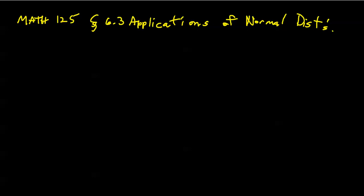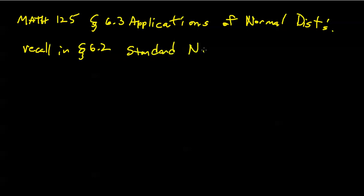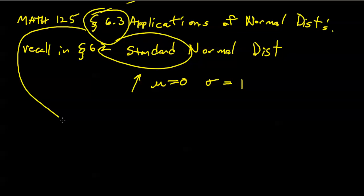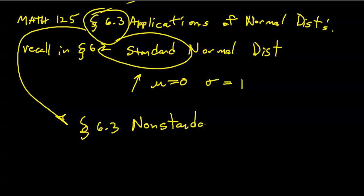Good afternoon. Today we're going to talk about section 6.3 entitled Applications of Normal Distributions. Recall in section 6.2 it was all about the standard normal distribution. In a standard normal, the mean by definition is always 0 and the standard deviation by definition is always 1. In 6.3 we're going to start talking about non-standard normal distributions — how to compute probabilities when our mean might not be 0 or our standard deviation might not be 1.